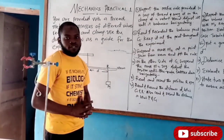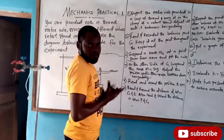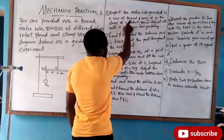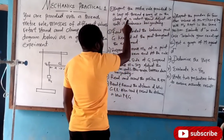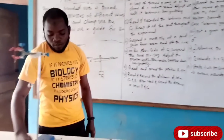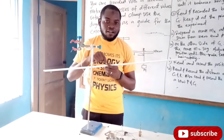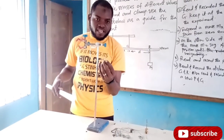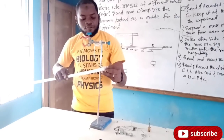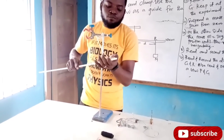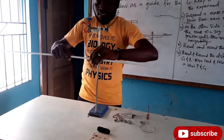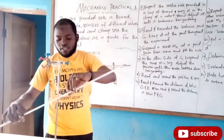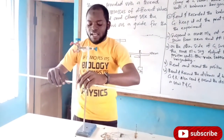Roman numeral one: we are told to support the meter rule provided in a loop of thread and hang it on the clamp of a retort stand. Here is the meter rule; I already created a loop — you can see the loop. I'm going to support this meter rule with the loop, putting it inside like this. The question says we should adjust it until it balances horizontally. You can see it's not balanced now, so I need to adjust it until it balances horizontally.